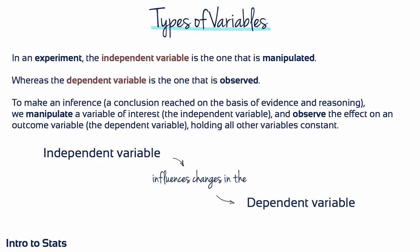To help identify which is which: the independent variable is the thing being controlled, decided, manipulated, or assigned by the researcher. The dependent variable is what's being measured. The manipulation of the independent variable usually comes before the measurement of the dependent variable, so looking at what comes before is another way to identify which is which.